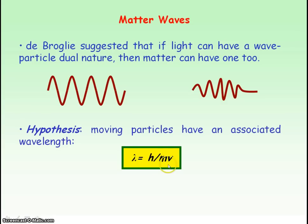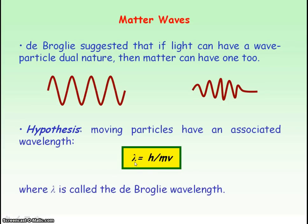Mass times velocity is equal to the momentum of a particle. So we can say the wavelength, known as de Broglie's wavelength — the wavelength for a particle traveling as a wave — is equal to Planck's constant divided by the momentum.